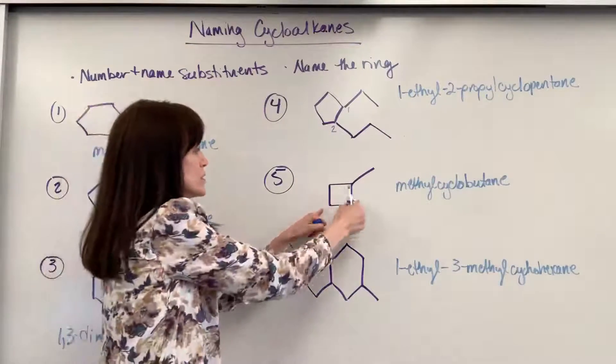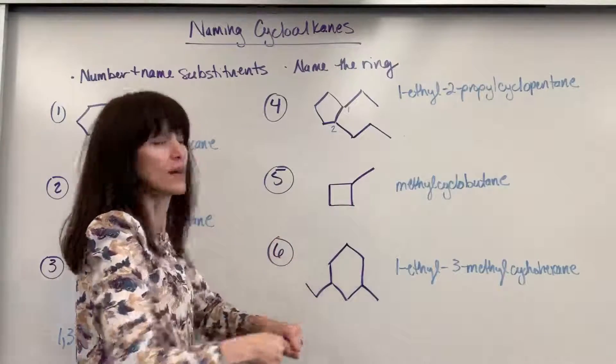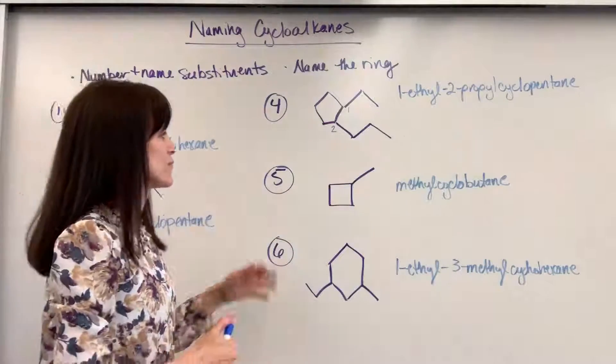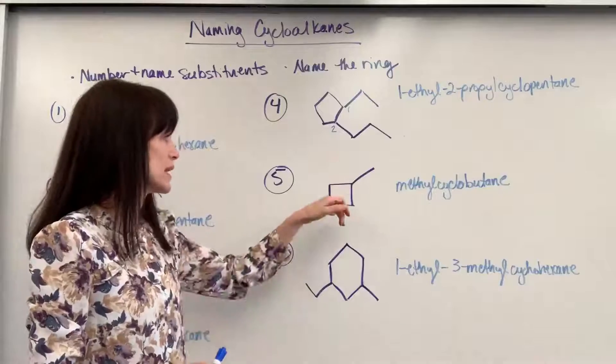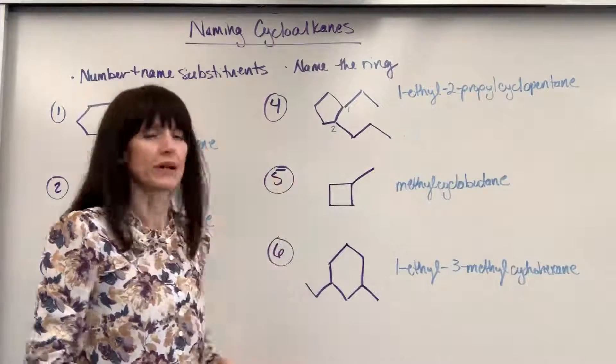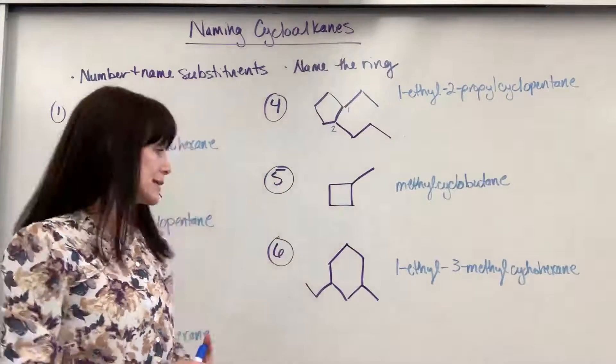This one, we've got one, two, three, four carbons in our cyclical species, four bute. So this is going to be a cyclobutane. And then I've got one methyl group on it. So methylcyclobutane. Nice.